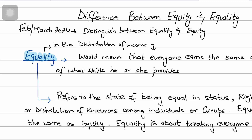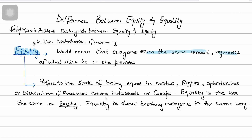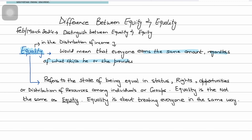Equality in the distribution of income would mean that everyone earns the same amount, regardless of the skills or value they bring. If I have two employees, equality says both should be paid the same amount even if person A is smarter than person B and brings more value. So equality means: equal in status, rights, opportunities, or distribution of resources for all.